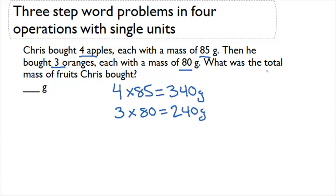Now what is the total mass of all the fruit? We have 340 plus 240, which is going to give us a grand total of 580 grams of fruit.